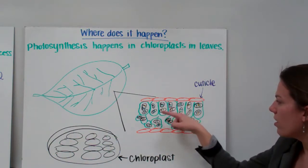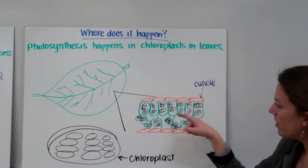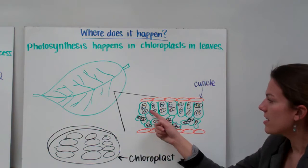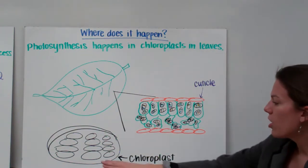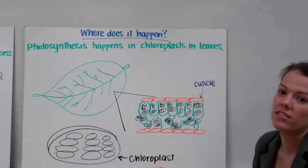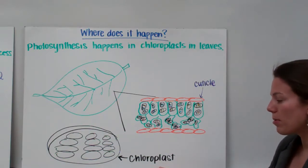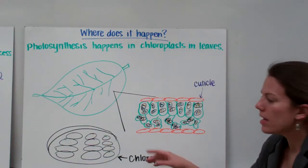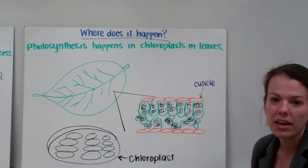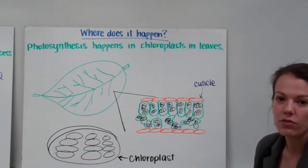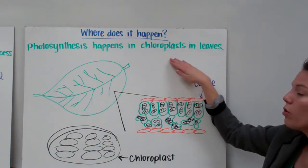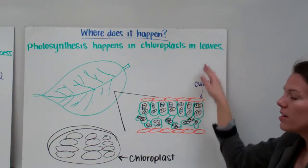Then it has a bunch of different cells inside of the leaf. Each cell is represented by a green blob here. Inside the cells, we have these things called chloroplasts. Chloroplasts is where the photosynthesis happens. You can recognize the shape of a chloroplast because it has these little stacks — it looks like stacks of pancakes or stacks of coins. Photosynthesis occurs in the chloroplasts inside of the leaves.